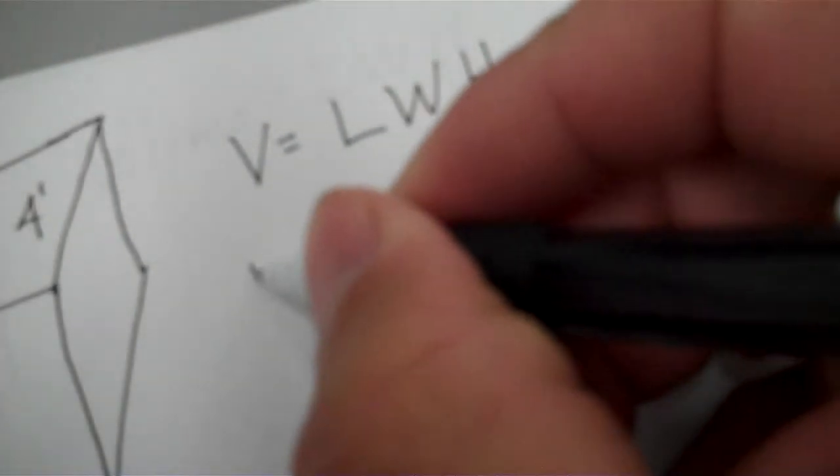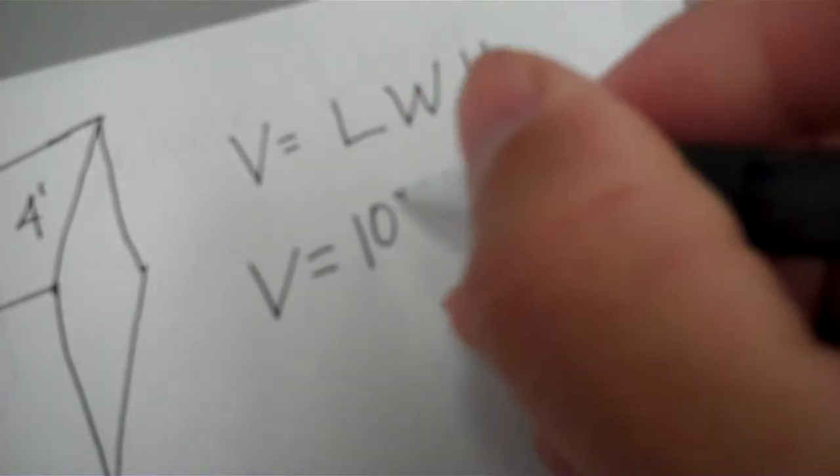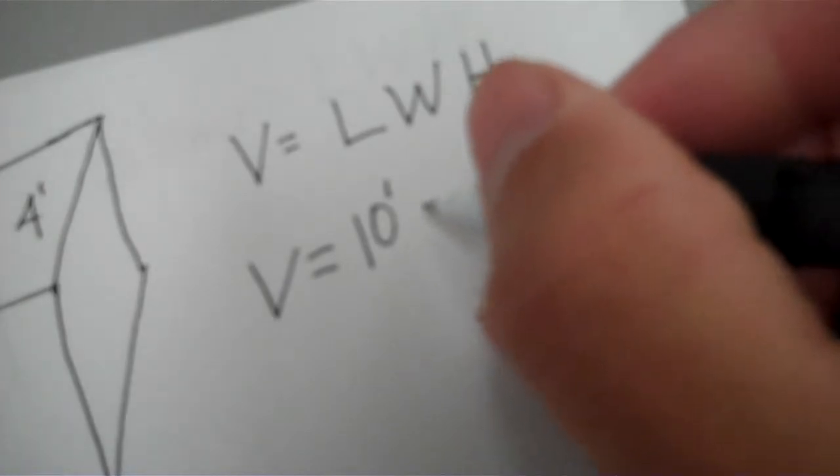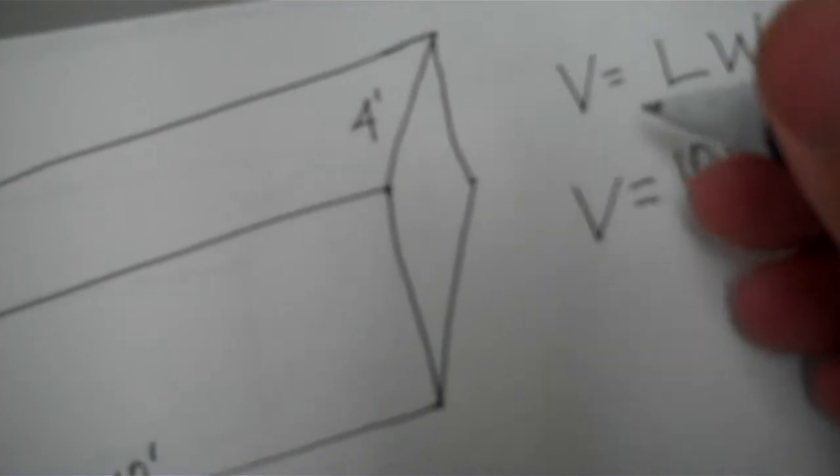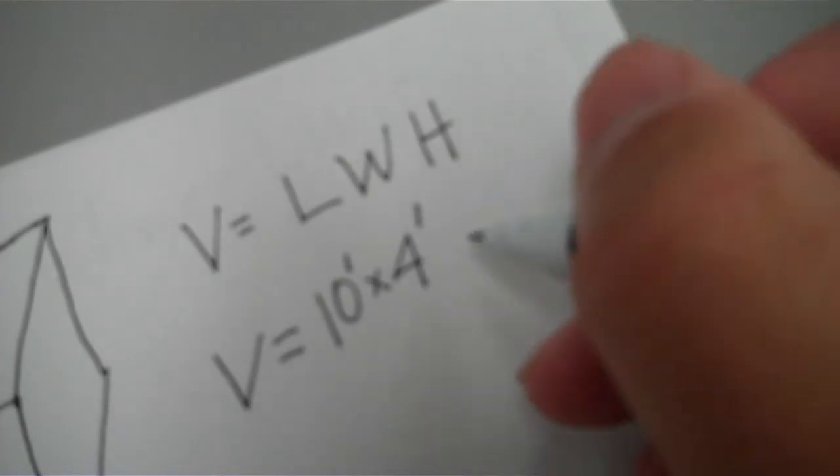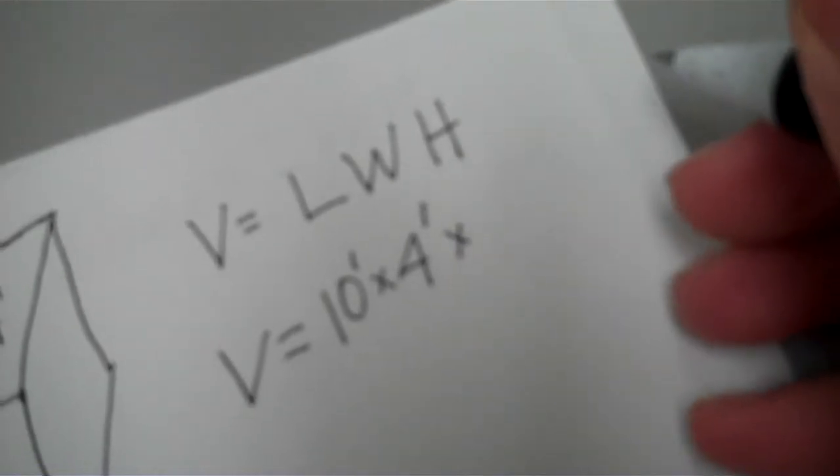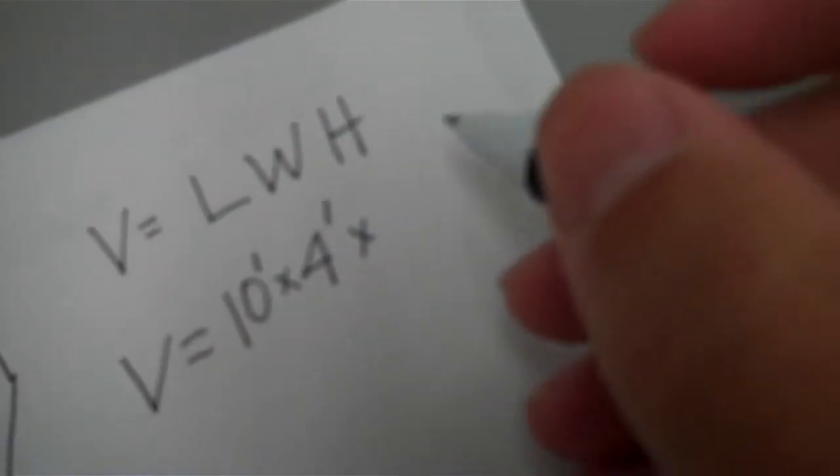Times the width. The width of this is from here to here, is four foot. Of course, take your unit with you. And the last is the height, and this is five foot in height, so bring that over and I plug that in, five foot.